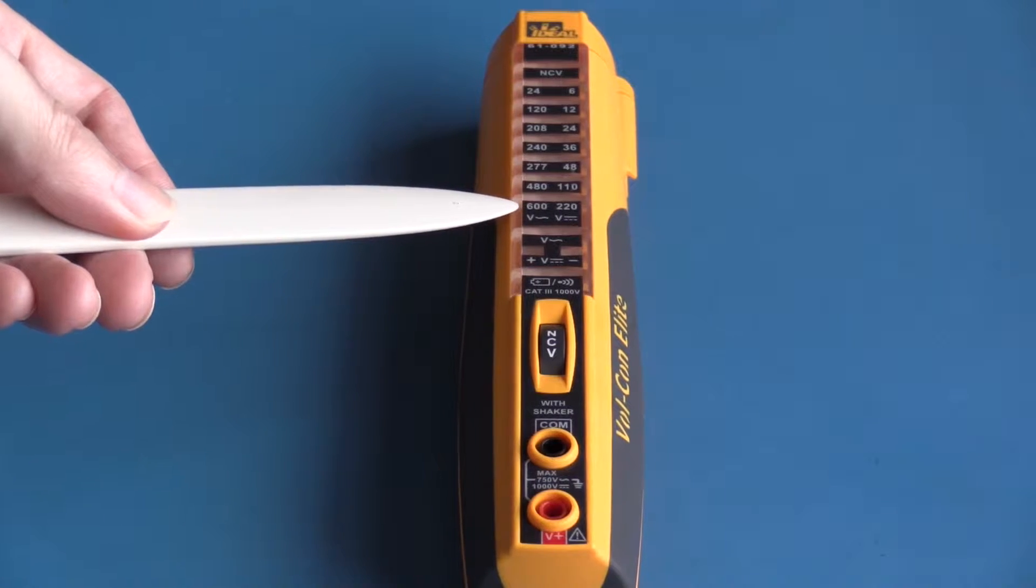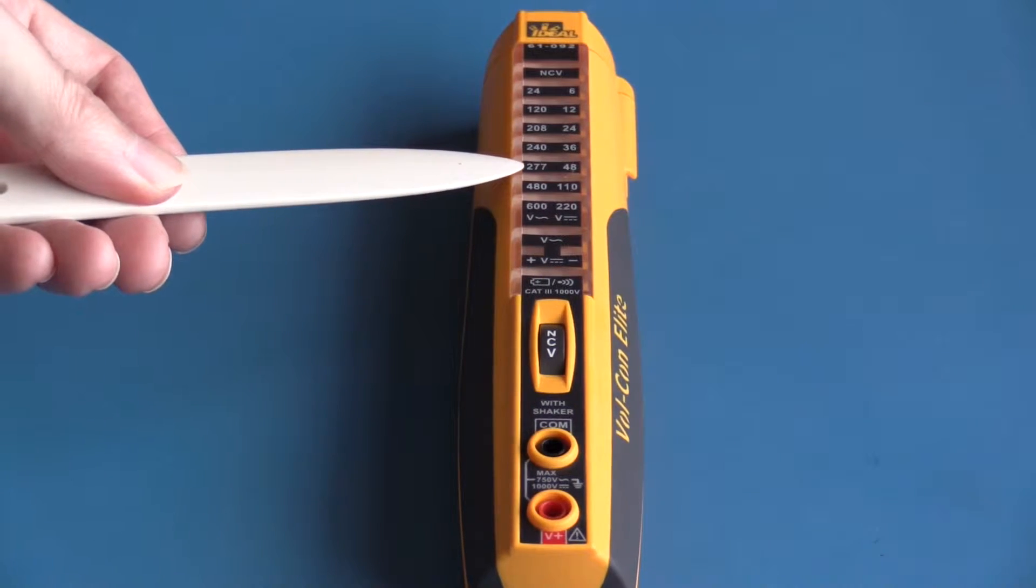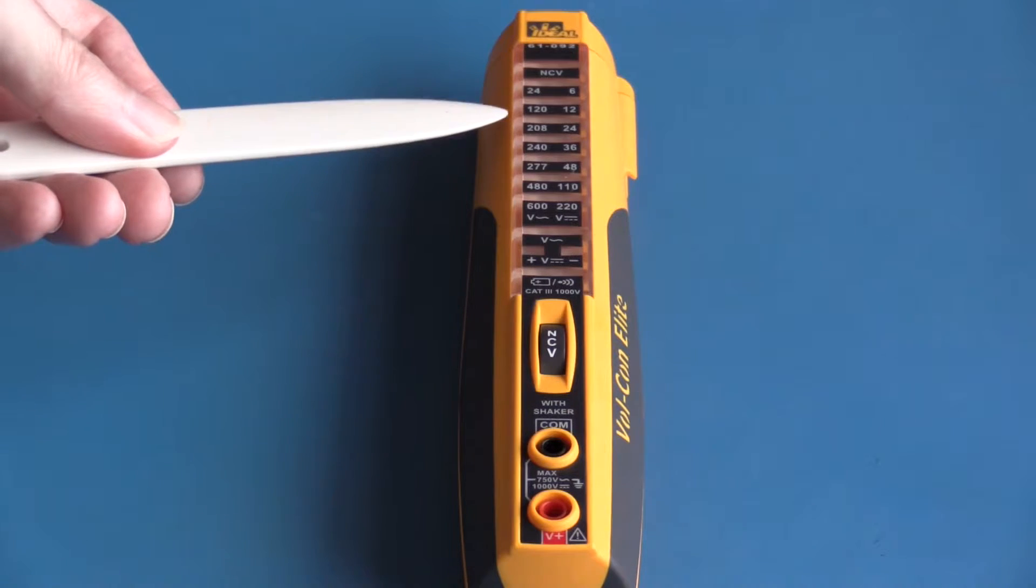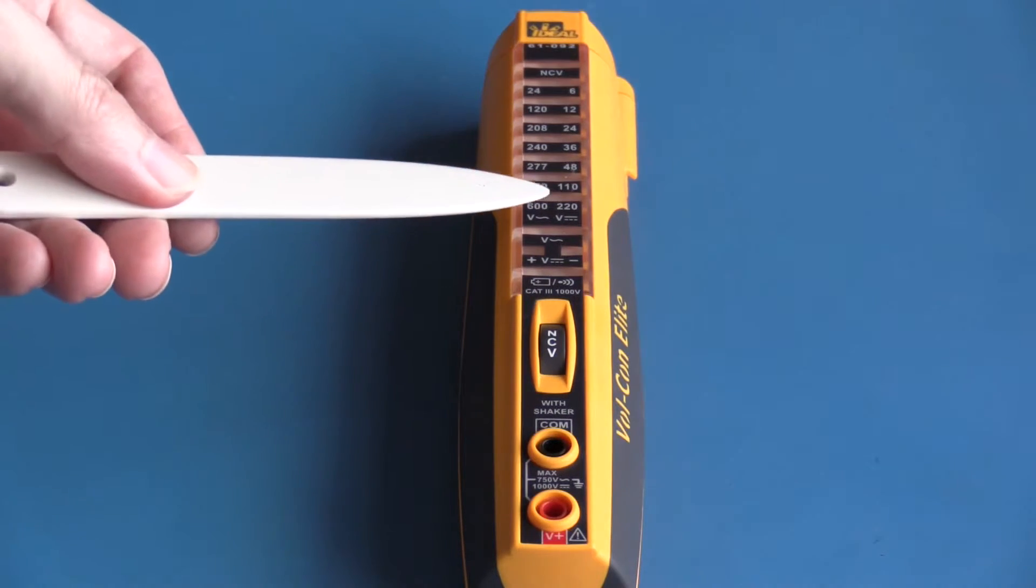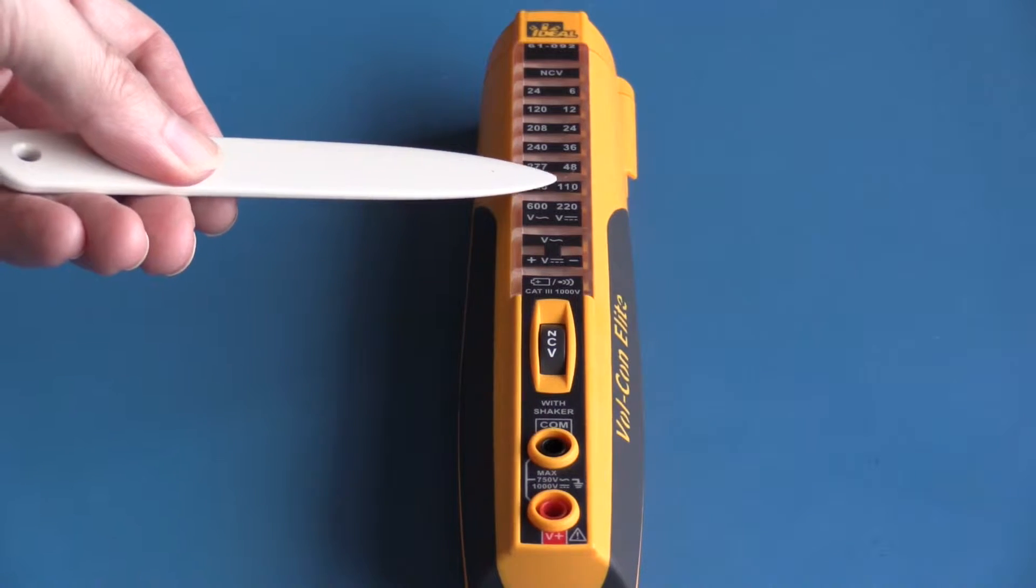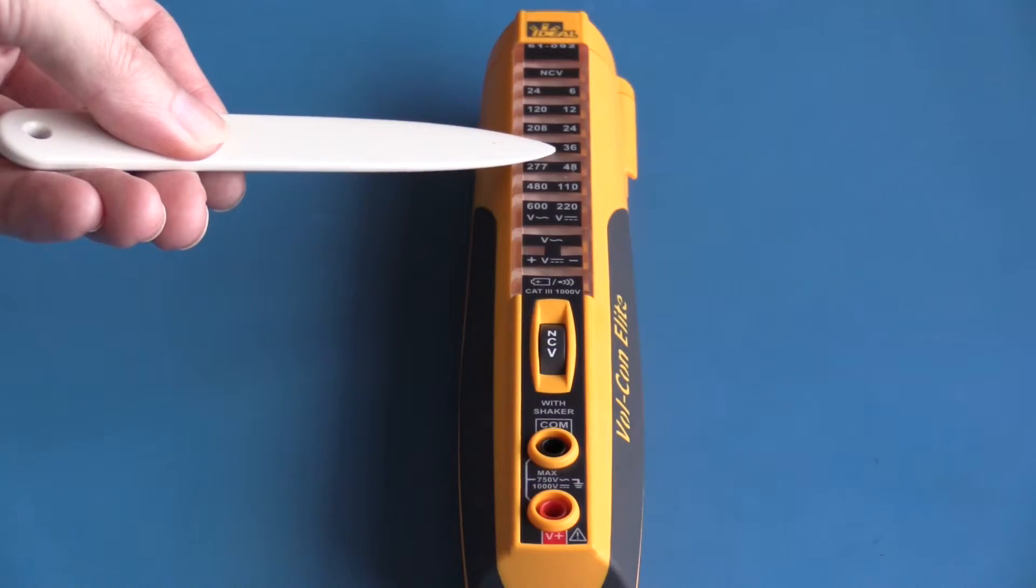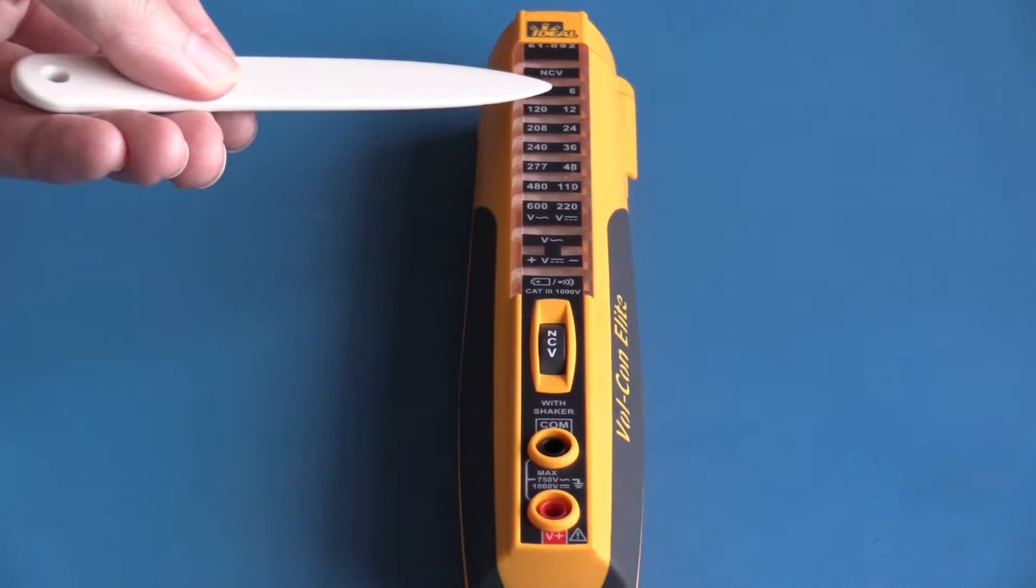On the AC side, 600, 480, 277, 240, 28, 120 and 24 volts. And on the DC side, it goes from 220, 110, 48, 36, 24, 12 and 6 volts.